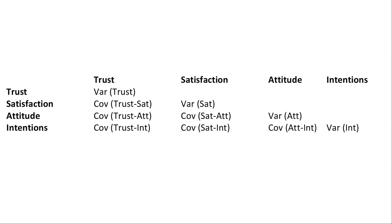Sometimes you'll hear SEM called causal modeling, and that's really a misnomer. If you look at the foundation of SEM, we're looking at covariances — when one moves does the other move? That doesn't necessarily mean one is causing the other. Yes, if one's moving and the other is moving very strongly, there may be an influence, but you can't say one is causing the other. You would need a manipulation to really show causation, and SEM doesn't do that. So be careful using the term causal modeling — it's really not showing causation. We look at correlations, variances, and covariances in SEM, but not causation.